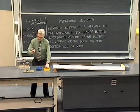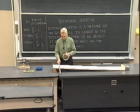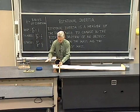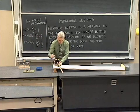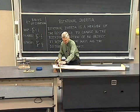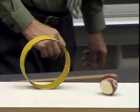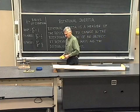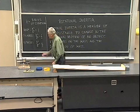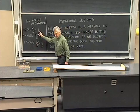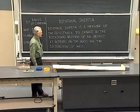Now let's compare the sphere with the hoop one more time. We compared the hoop with the solid cylinder before. Now let's compare the hoop with a solid sphere, and of course we expect the sphere to win this race. We see that the sphere beats out the hoop in the race down the hill because the sphere has a ratio of two-fifths where the hoop has a ratio equal to one. Rotational inertia.